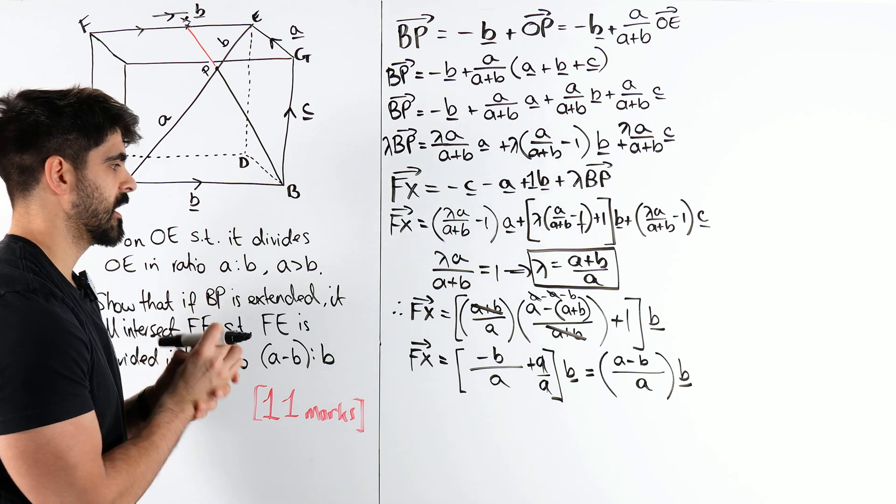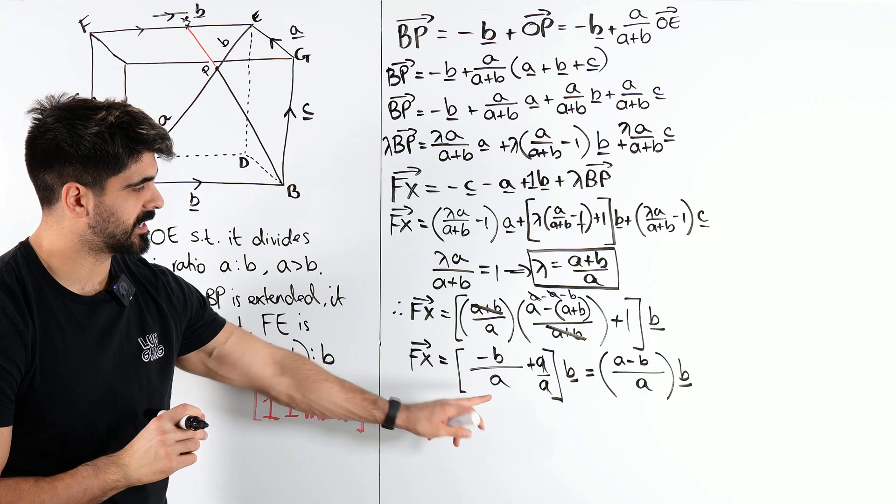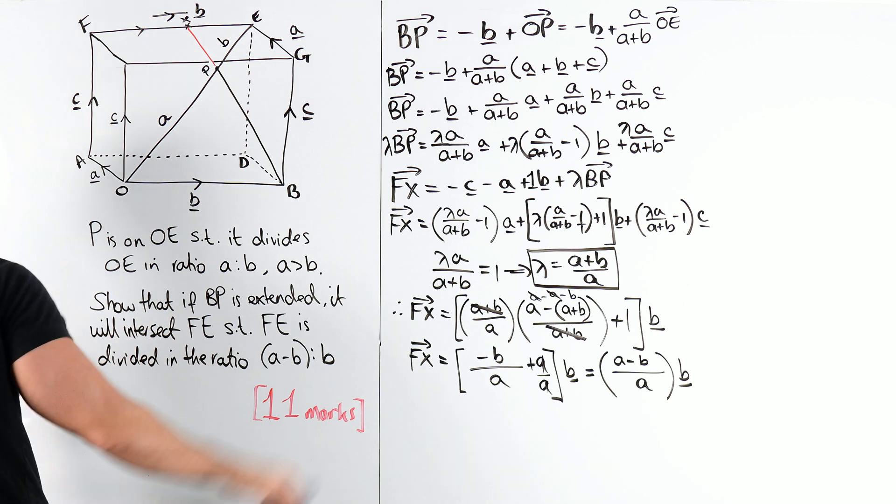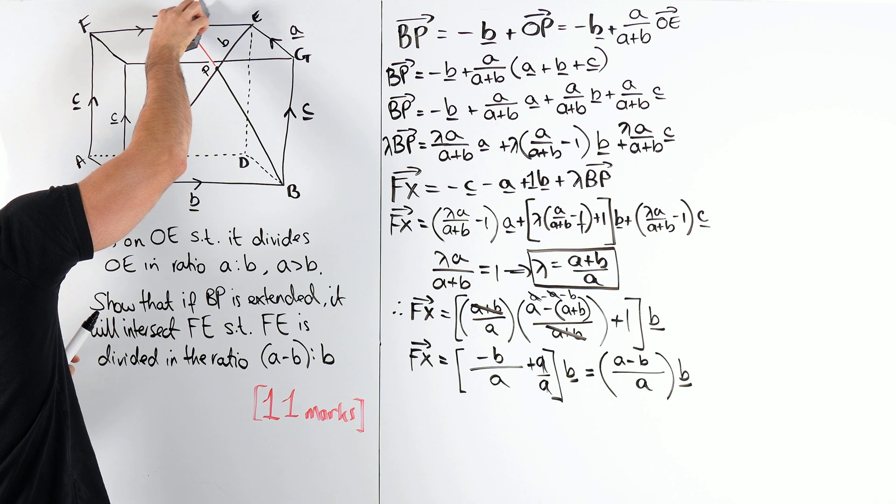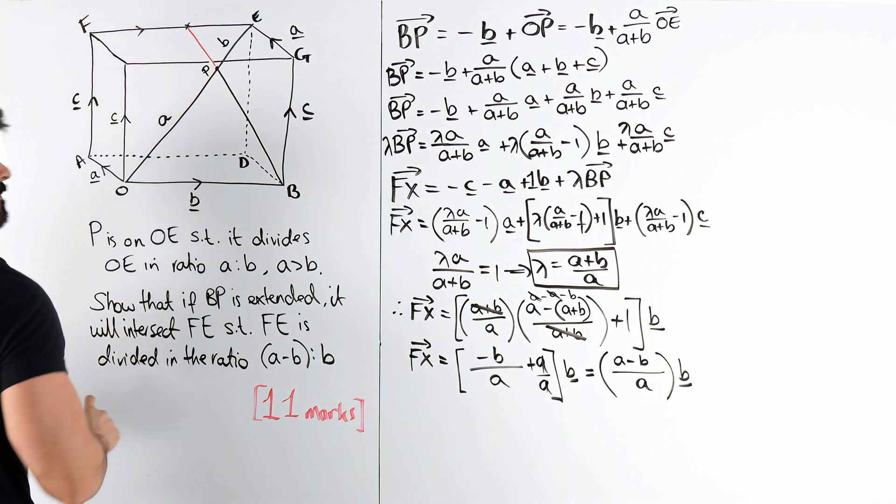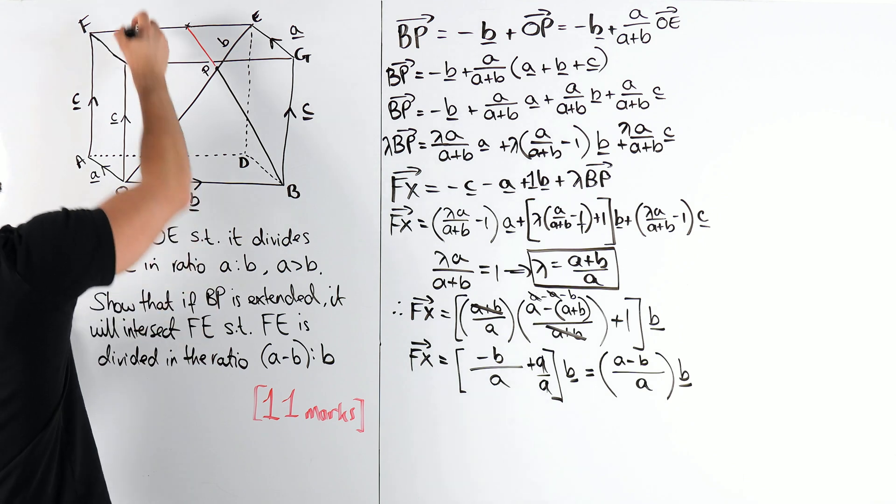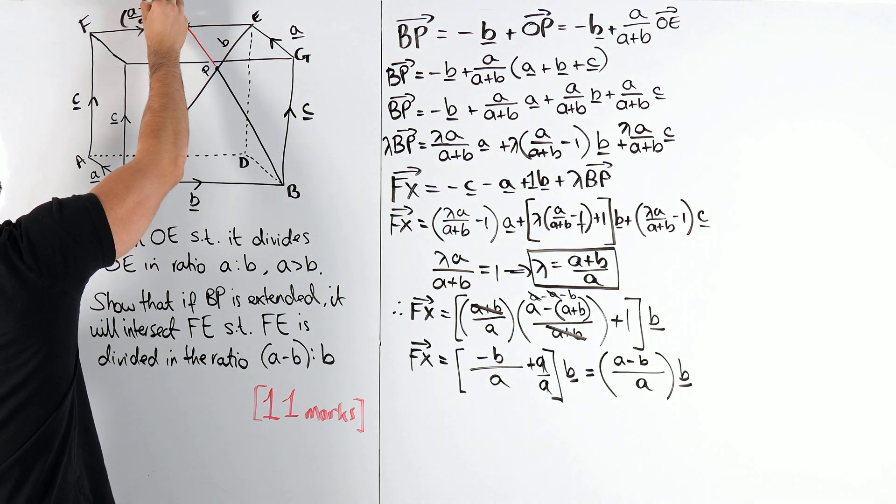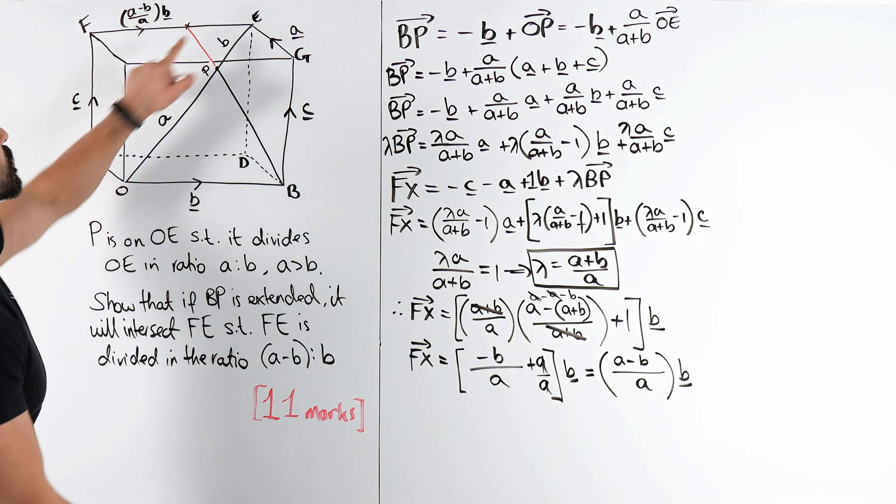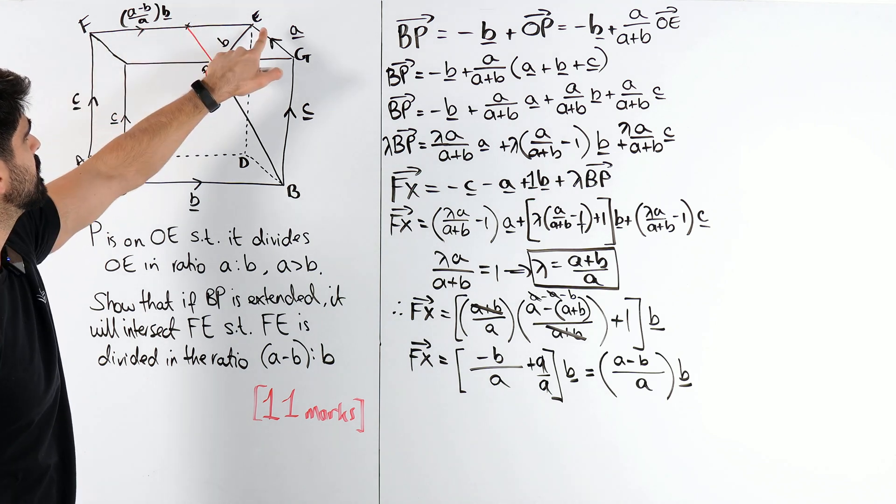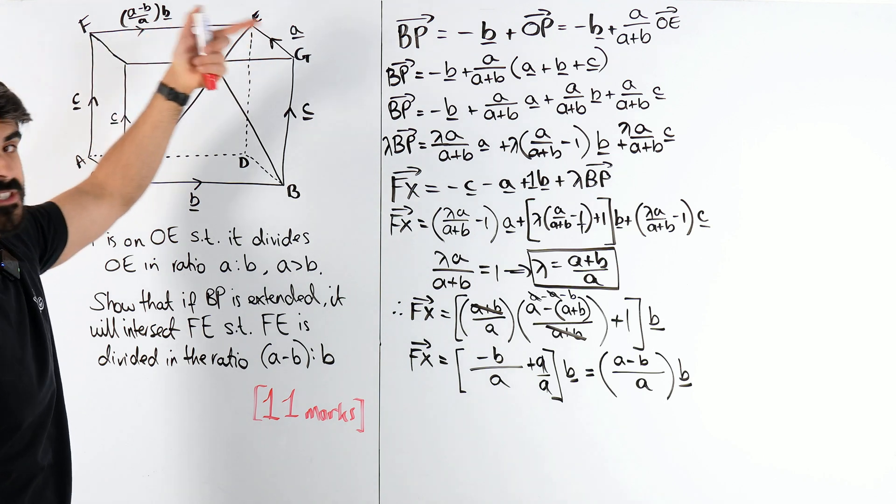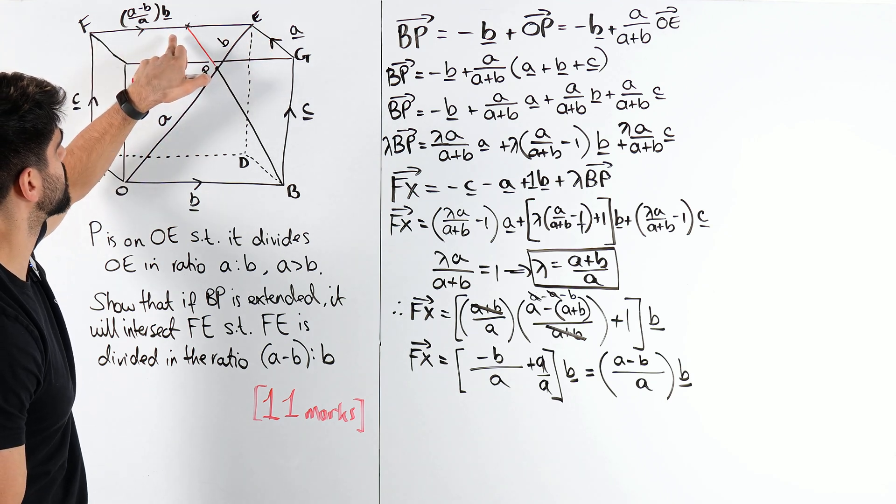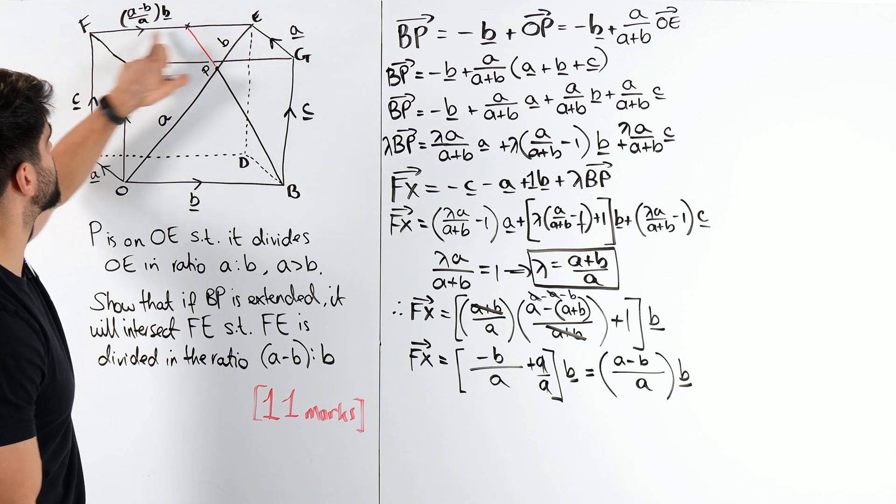Now, why am I saying that? Because what I've just worked out, if we look at the original diagram, is that this vector here is A minus B over AB. So, you just need to work out this one. Remember, this is B, this is this, so you have to take them away to get what's left. But you can think of this as 1, and this is just A minus B over A, okay? 1B, A minus B over AB. So, you just take them away by ignoring the B, right?